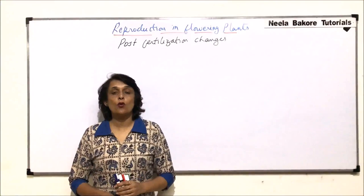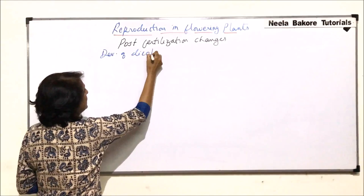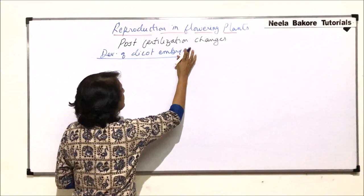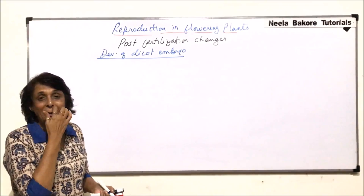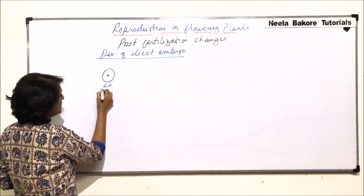In this video we will discuss one more post-fertilization event: the development of dicot embryo. In the case of dicot embryos there are various types of developments which have been explained, but the most common is what we are discussing. Let us start with the zygote, which is diploid.